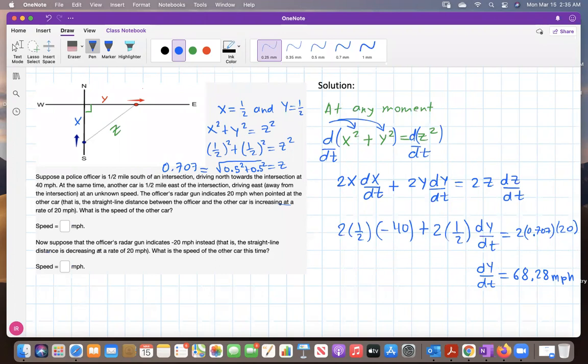Now they say, suppose that the officer's radar gun indicates negative 20 miles per hour instead. That is, the straight line distance is decreasing at a rate of 20 miles per hour. What is the speed of the other car this time? The idea is the same, precisely the same. The only thing that is going to change will be dz/dt here on the left, will change its value to -20.